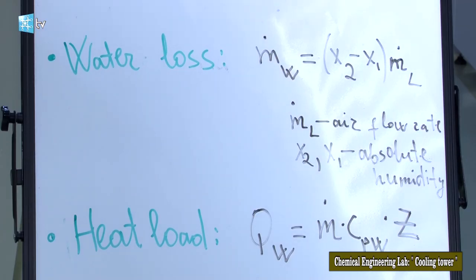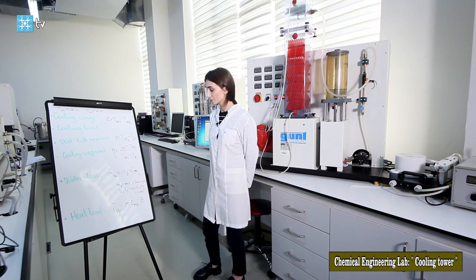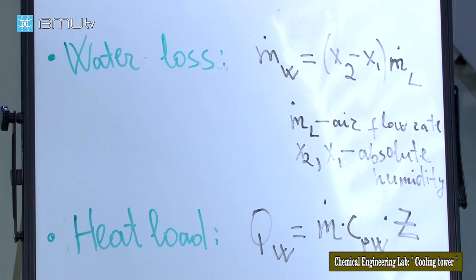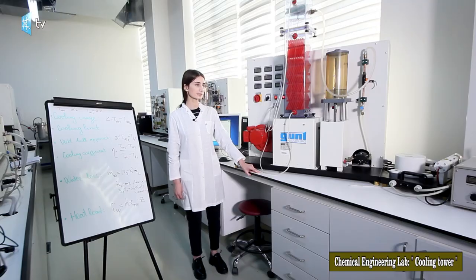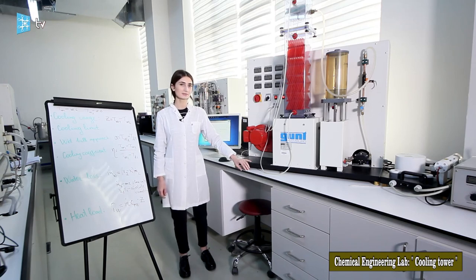Water loss can be calculated as the difference in absolute humidity at the air inlet and outlet multiplied by the air flow rate. Heat load is the product of the water flow rate times the specific heat of water times the cooling range of the process. In this experiment, we demonstrated the influence of air flow rate, water flow rate, and cooling water temperature on cooling performance. The findings revealed that volumetric air flow rate and cooling water temperature enhance cooling performance, while increasing water flow rate decreases it. That's it for today's lesson — see you next lesson.